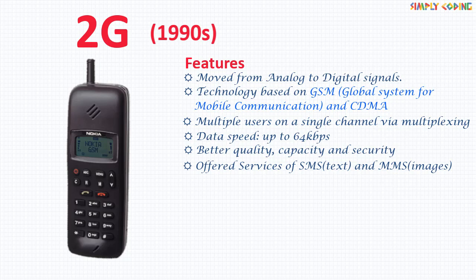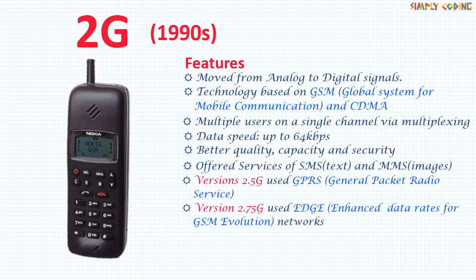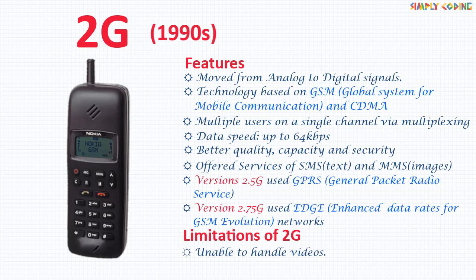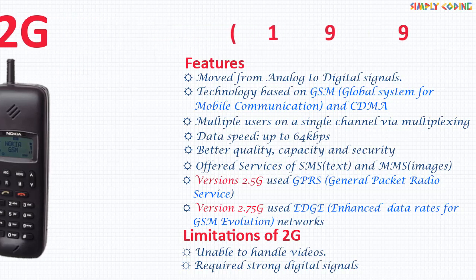The later version of this generation, called 2.5G, used GPRS — General Packet Radio Service. And 2.75G used EDGE — Enhanced Data Rate for GSM Evolution. The limitation of this generation was that it was unable to handle complex data such as videos, and it required strong digital signals to help mobile phones work.